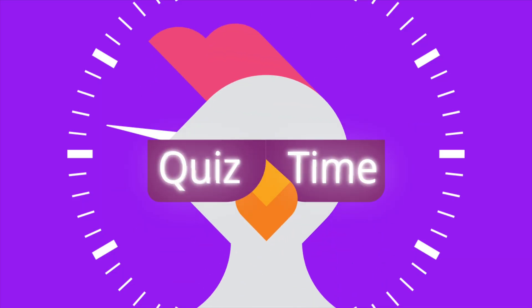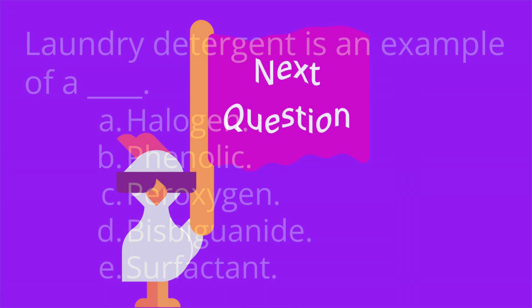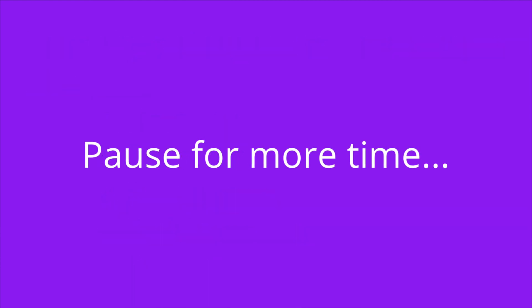It's quiz time, and I have three multiple-choice questions for you. Question number one: chlorine is an example of a blank. A) halogen, B) phenolic, C) peroxygen, D) bisbiguanide, or E) surfactant. The answer is A, halogen. Question number two: laundry detergent is an example of a blank. A) halogen, B) phenolic, C) peroxygen, D) bisbiguanide, or E) surfactant. The answer is E, surfactant.